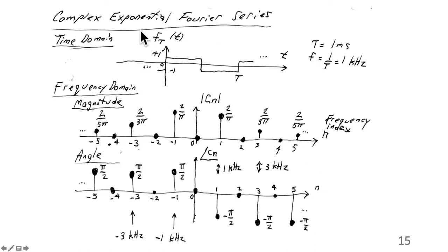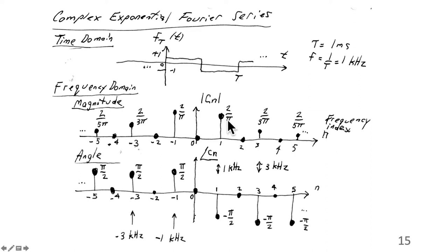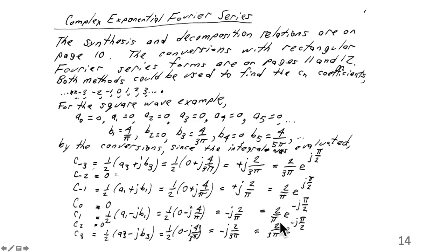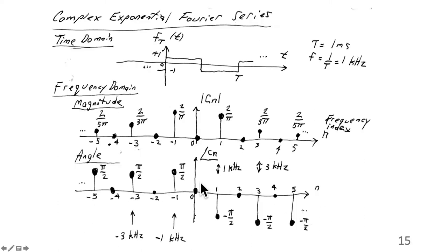If we plot them now, the complex exponential Fourier series: the time domain signal f sub-T of t versus t goes from plus 1 to minus 1. For the example where T is 1 millisecond and frequency is 1 kHz, the frequency domain representation shows the magnitudes and angles of the complex numbers. The frequency index is n. For the complex exponential Fourier series coefficients, they go for all integers. The magnitudes were all positive: for c1 it was 2 over pi, for c3 it was 2 over 3 pi. The phases for c minus 3 and c minus 2 are positive; the phases for c1 and c3 are negative.